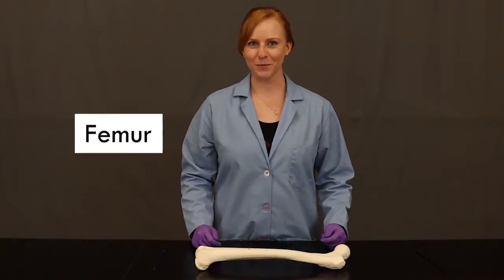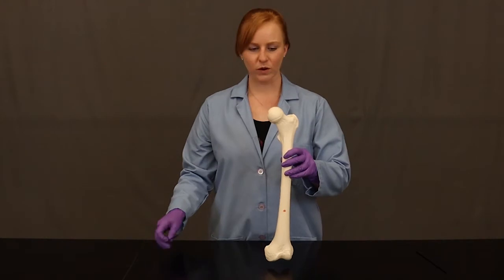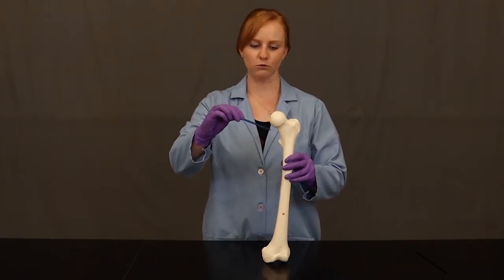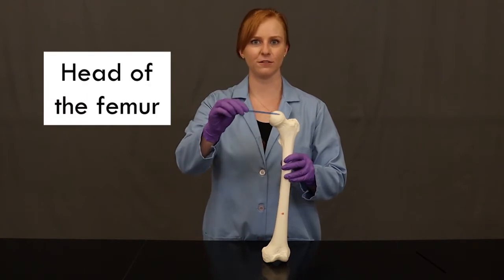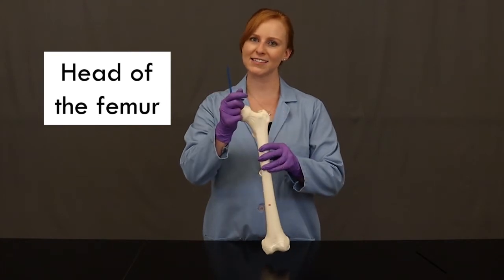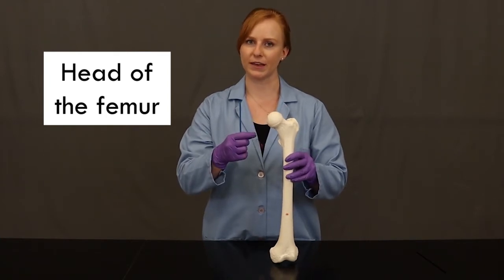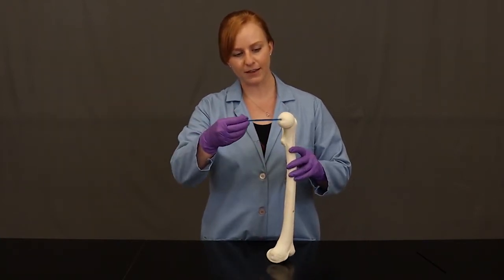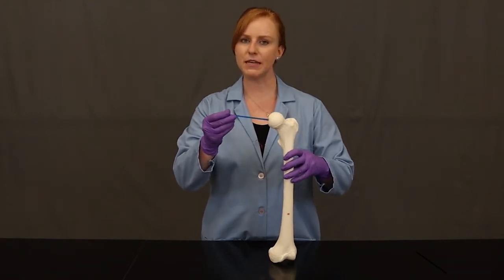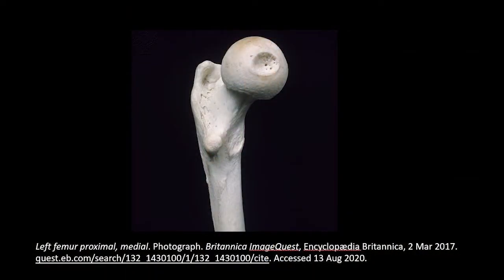Now let's talk about the femur. The femur is the largest bone in the human body, and it is the bone of your thigh. One of the first things you'll notice about the femur is this big round part here, called the head of the femur — that's where it's going to articulate with the os coxa. On the medial part of the head, you'll notice this small little pit. A pit in a bone is called a fovea, and this little pit is in the head of the femur, so it's called the fovea capitis. Remember, capit means head.